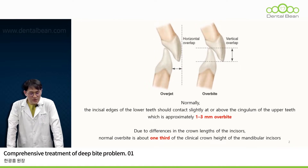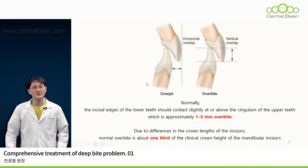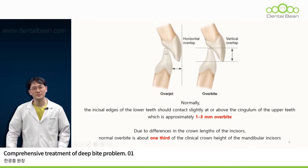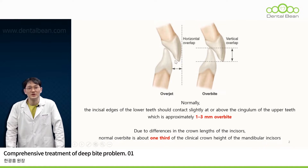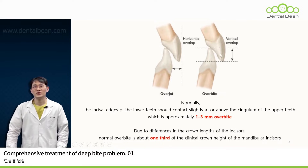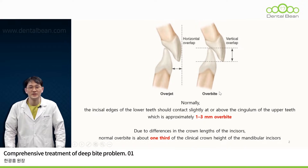If we look at the relationship between the maxillary and mandibular incisors from a sagittal view, the maxillary incisors overlap the mandibular incisors from top to bottom. Typically, maxillary incisors sit in front of mandibular incisors. The horizontal overlap, anterior to posterior, where the maxillary incisors are ahead of the mandibular incisors, is what we call overjet. The vertical overlap, where the maxillary incisors cover the mandibular incisors, is what we call overbite.